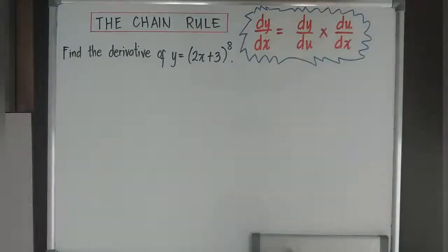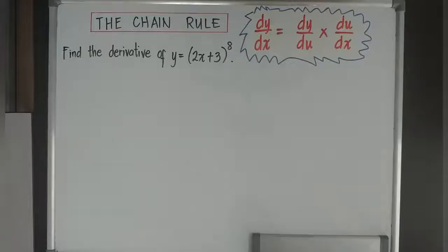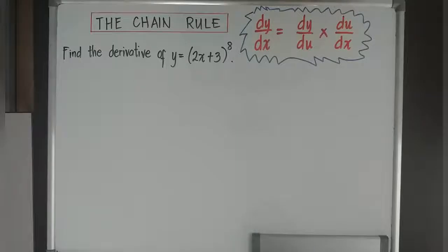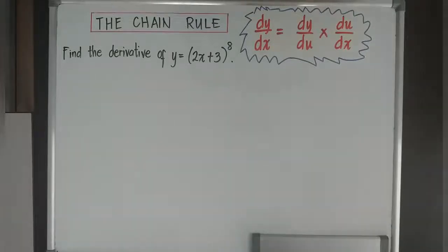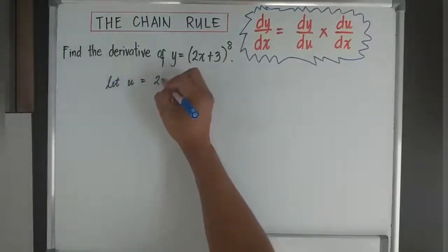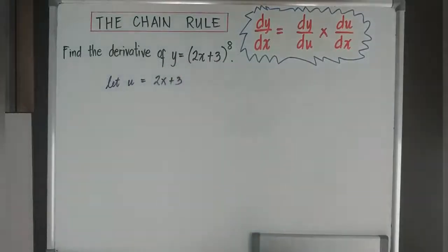Definitely, there's something that will occur that needs to occur as the value of u. For example, find the derivative of y is equal to 2x plus 3 to the power of 8. I cannot expand this — actually I can expand, but it will be a little bit difficult. I can expand using binomial expansion, but it will be a longer process. So what I need to do is apply this by substituting what is inside the bracket with a u. So I am going to let u be equivalent to 2x plus 3, because the expression inside the bracket is 2x plus 3.